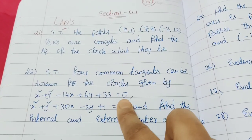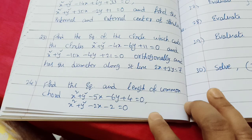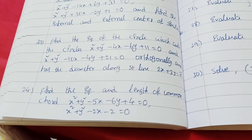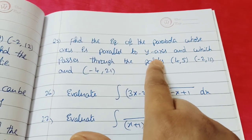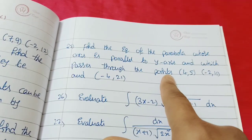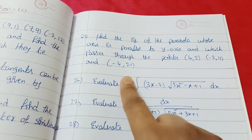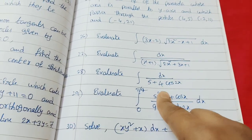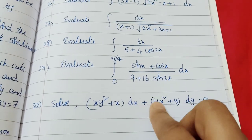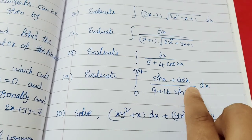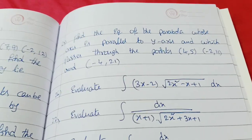Common tangents - internal and external - find the center of similitude. Three questions only from exercise 3A; exercise 3B is not there. Just one exercise - easy marks. Integration: three questions from integration. Differential equations: only two exercises included.